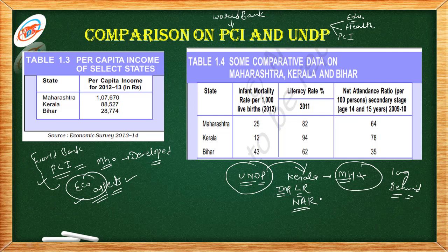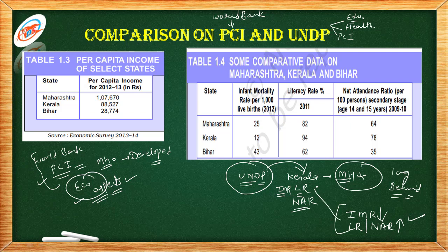If you are asked which state is better in UNDP ranking, the answer is Kerala, because here the infant mortality rate is low, and the literacy rate and net attendance ratio are higher. That's why Kerala is better.